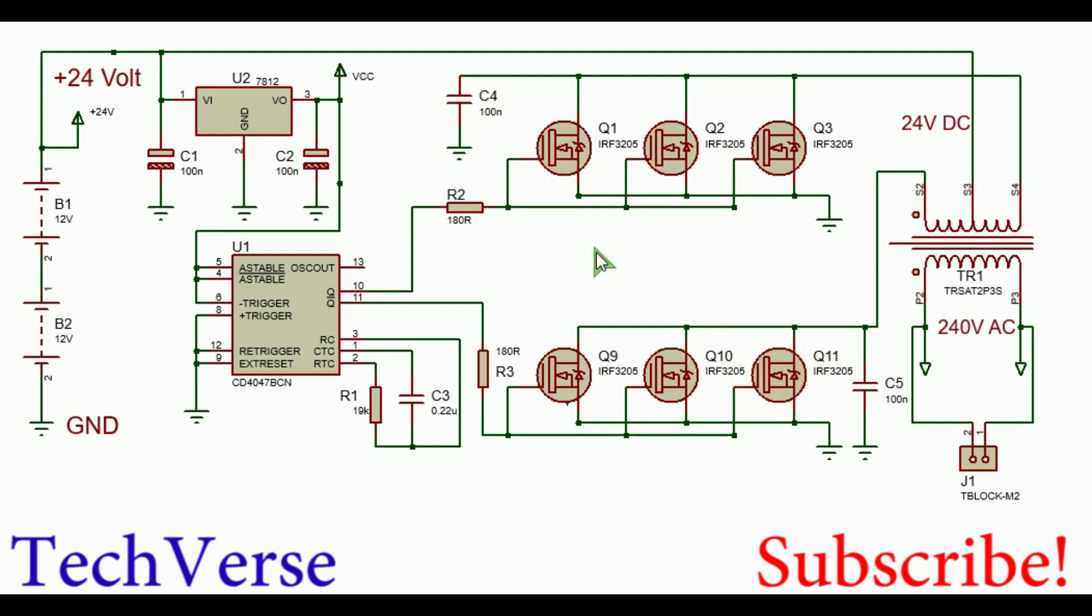You have C4 and C5 connected across the drain and source of all the MOSFETs to act as voltage spike arresters. Since this is a push-pull driver, there will be some voltage spikes generated when the MOSFETs are switching.